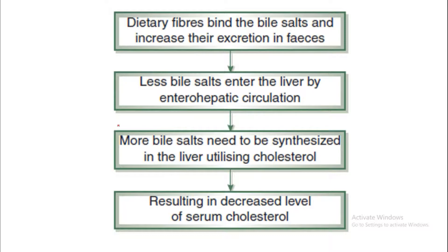Dietary fibers bind bile salts and increase their excretion in the feces. Less bile salt enters the liver via enterohepatic circulation, so more bile salts need to be synthesized in the liver. Once dietary fibers bind the bile salts inside the intestine, enterohepatic circulation of bile salts is prevented, and those bile salts bound to dietary fibers are excreted in the feces — a net loss of bile salts.